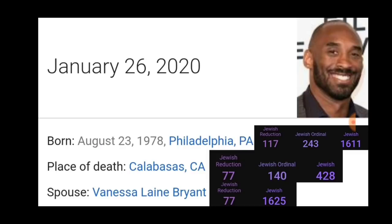His spouse Vanessa Lane Bryant in Jewish reduction also ends up being 77. The top one is 11 times 7, which is 77. Going to the bottom one: Jewish regular gives 1 plus 6 equals 7, 2 plus 5 equals 7 - just different ways of doing the same thing. They do everything the same and it'll be very obvious to anyone who looks. I'm going to show you a lot more stuff - you will not believe the connections with this virus and Kobe Bryant.